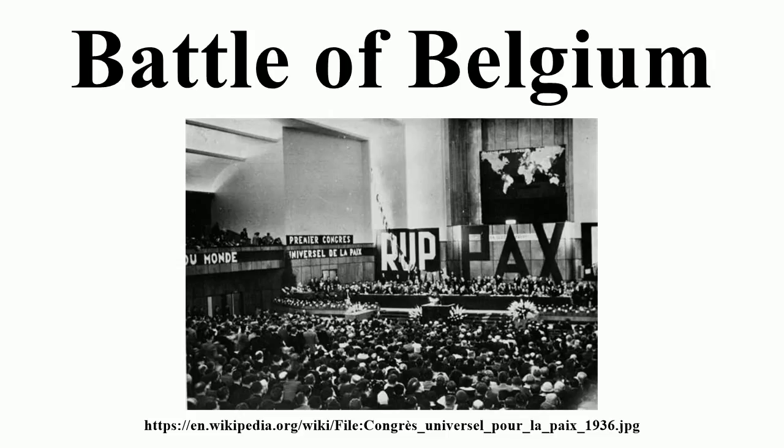The Belgian collapse forced the Allied withdrawal from continental Europe. The British Royal Navy subsequently evacuated Belgian ports during Operation Dynamo, allowing the British army to escape and continue military operations. France reached its own armistice with Germany in June 1940. Belgium was occupied by the Germans until the autumn of 1944, when it was liberated by the Western Allies.